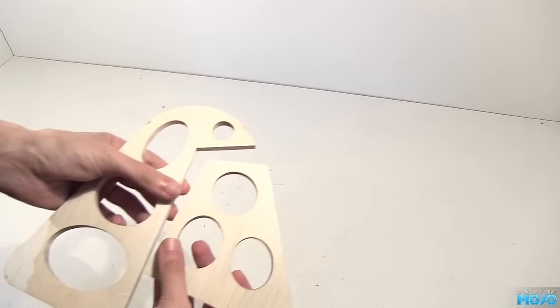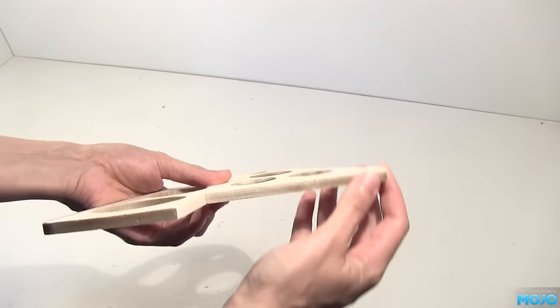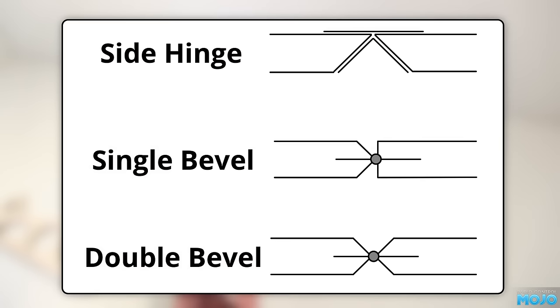Right, the hinge edges are currently square, which really isn't any good. We need to bevel them so the rudder can move. There's a couple of methods. The side hinge, usually used on park flyers with a tape hinge. The single bevel, which is how Seagull did the ailerons. I tend to bevel both parts. This gives the most freedom of movement. Actually, if you do a 90 degree bevel you get way more movement than needed, but it guarantees there won't be any binding.